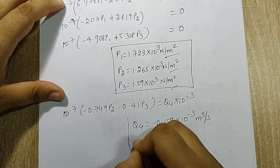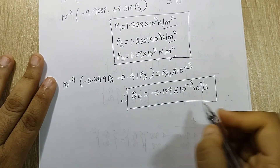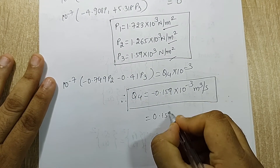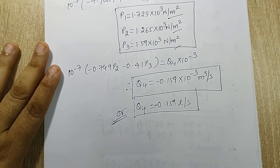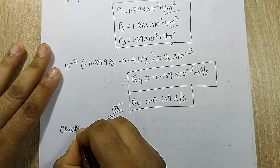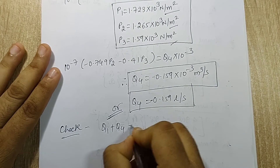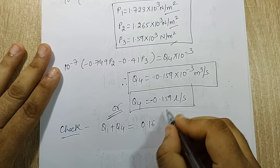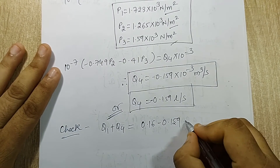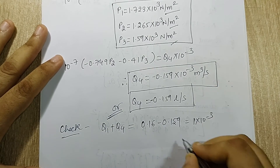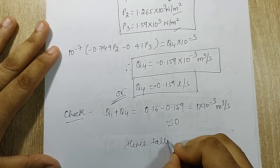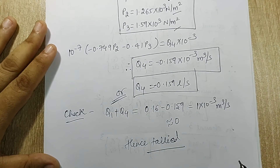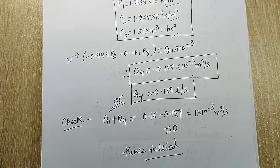For the check step, the sum of discharges should be approximately zero: Q1 + Q4 = 0.16 + (−0.159) = 1×10⁻³ ≈ 0 m³/s. This confirms the inlet and exit flows balance. With this I end the session — I hope you understood the numerical. If you have any doubts, please write in the comment section. See you in the next session, thank you.